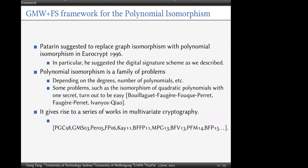In 1996, Patarin suggested replacing graph isomorphism with polynomial isomorphism, and in particular proposed a digital signature scheme as described. Polynomial isomorphism is a family of problems depending on the polynomial degree, number of polynomials, and so on. Some members of this family, such as isomorphism of quadratic polynomials with one secret (IP1S), turn out to be easy, and this gave rise to a series of works in multivariate cryptography.